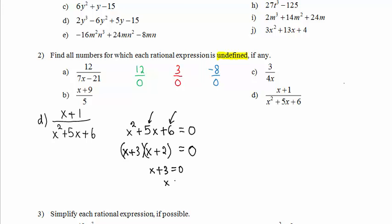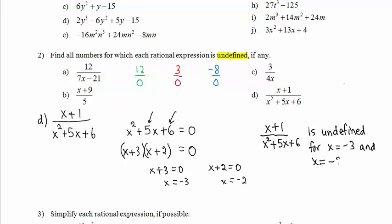We get solutions x equals negative 3 and x equals negative 2. If you input either of those numbers in for x into this expression, you would get a 0 denominator. You would get an undefined expression. So therefore, our conclusion is that this expression is undefined for x equals negative 3 and x equals negative 2.